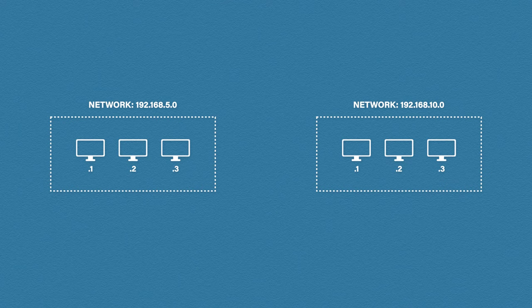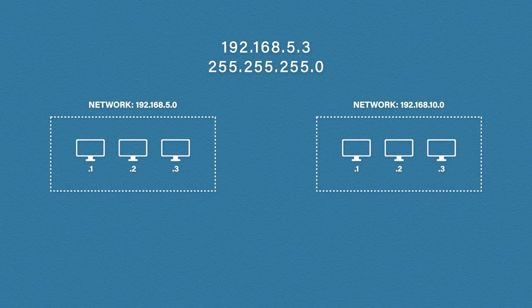So with all of that in mind, if we had some data to send to 192.168.5.3 with a subnet mask of 255.255.255.0, where would we send it? Well, if we look at the subnet mask, we can see that the network is 192.168.5. So we know that 3 is our host number, so we send it over to the host in the network on the left. Hopefully that all makes sense so far.